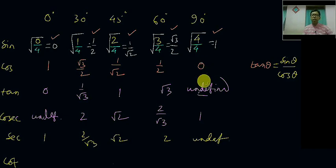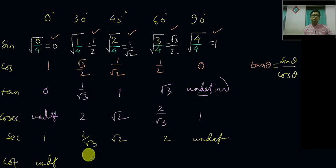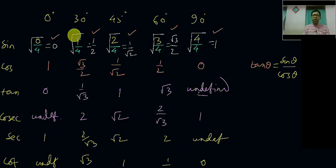Similarly, cotangent of the standard angles is the reciprocal of tangent of those standard angles. So cot 0 degree is undefined, cot 30 degree is root 3, cot 45 degree is 1, cot 60 degree is 1 upon root 3, and cot 90 degree is 0 — because the reciprocal of undefined is 0. So this is your complete chart for the trigonometric ratios of the standard angles with respect to all trigonometric functions.